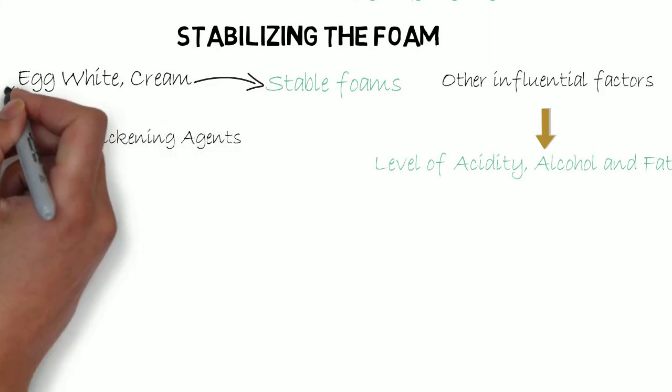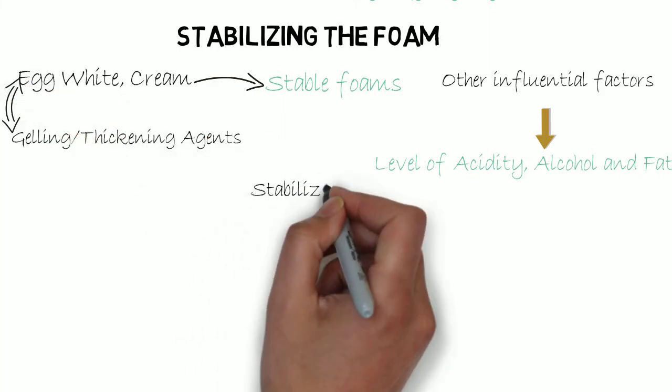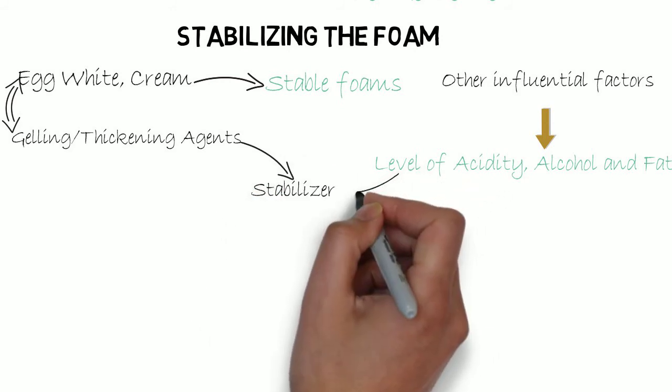Most gelling and thickening agents can be used as a stabilizer as long as the liquid is in the operating range.